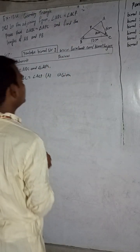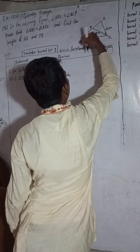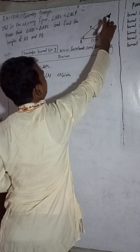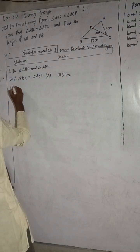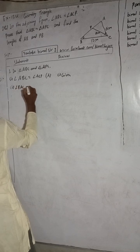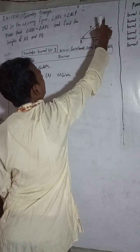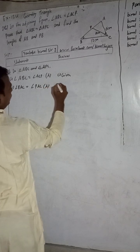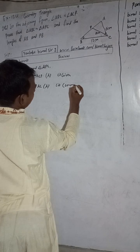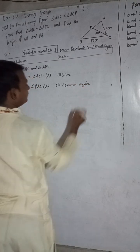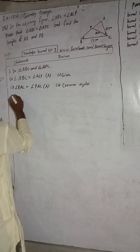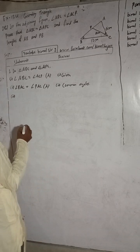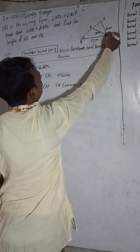Now this angle — in the bigger triangle ABC — is equal to the same angle in the smaller triangle. This is a common angle. For the bigger triangle, this angle is angle BAC. Angle BAC is equal to angle BAC in the small triangle as well. So this is common angle BAC.